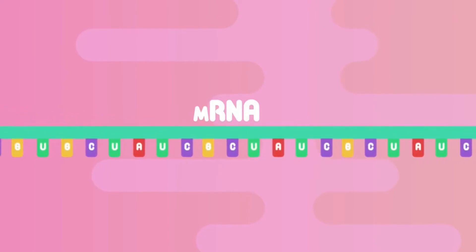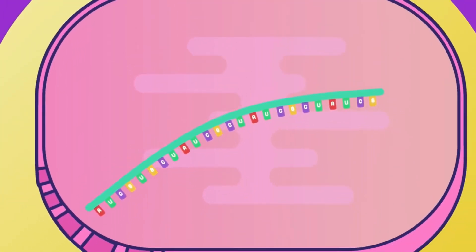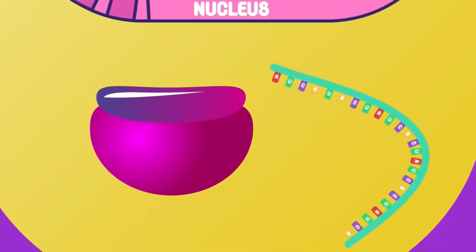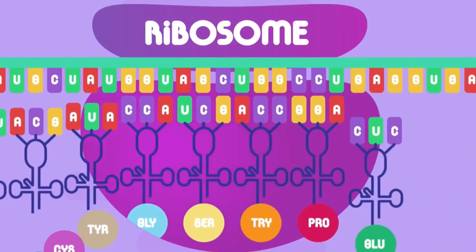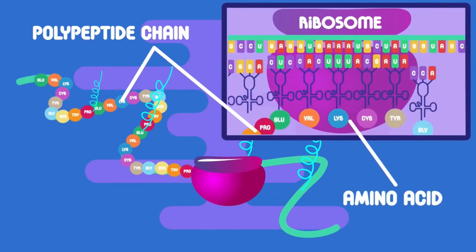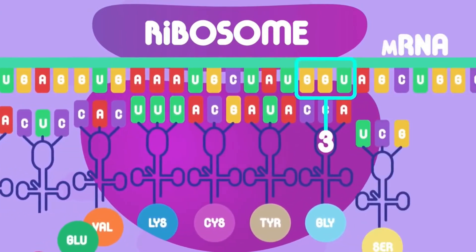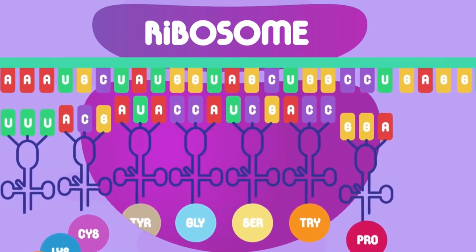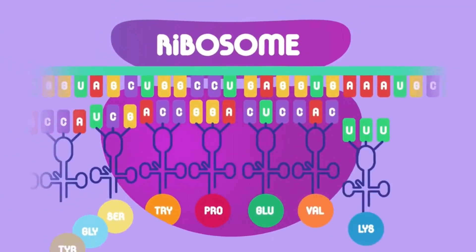This whole process inside the nucleus is called transcription. The mRNA then travels from the cell nucleus and out into the cytoplasm until it reaches and attaches to a ribosome. The ribosome then sticks amino acids together to make a polypeptide chain, following the order of amino acids as coded for by the mRNA. Three base codons on the mRNA code for one amino acid. This whole process in the ribosome is called translation.